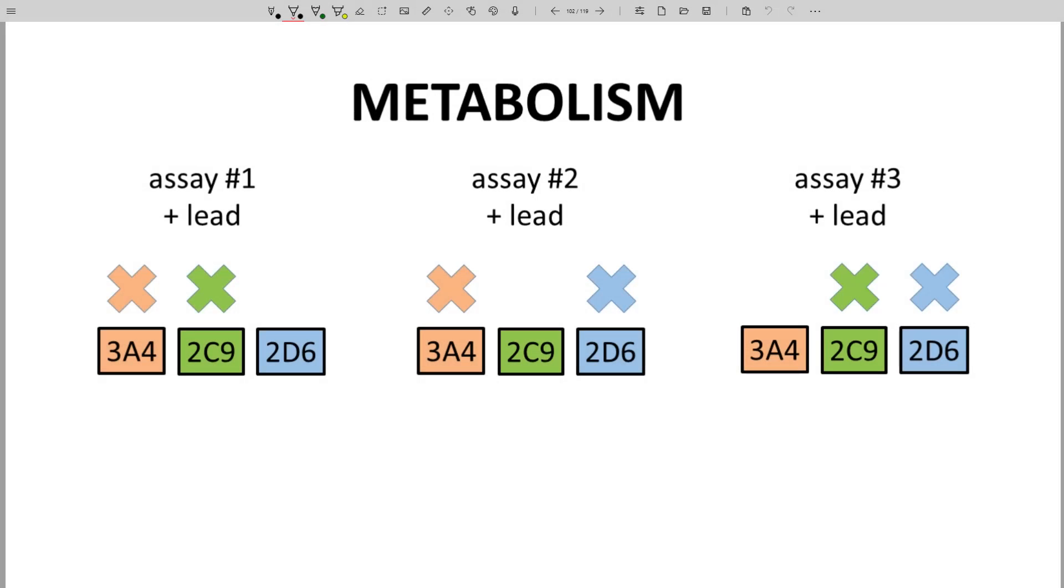Let's first look at which isoform is responsible for lead metabolism. Let's say our liver microsomes contain three CYP isoforms: 3A4, 2C9, and 2D6. We could perform three assays with our lead, the microsomes, and a combination of known inhibitors. These are the colored Xs.